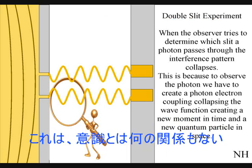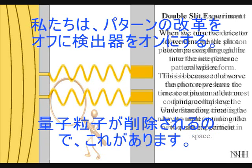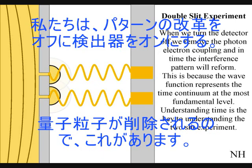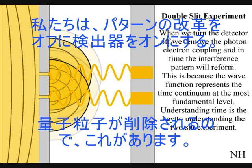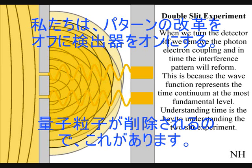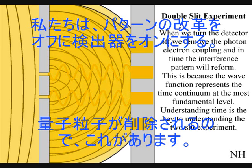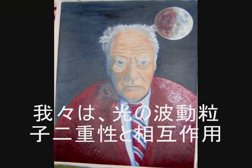This has nothing to do with consciousness. If we turn the detector off, we remove the photon-electron coupling, and in time, the interference pattern will reform. Just like in Newton's first law of motion, the interference pattern will continue to maintain its state, unless acted upon by an external force.